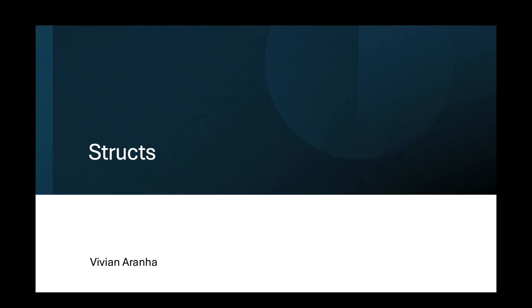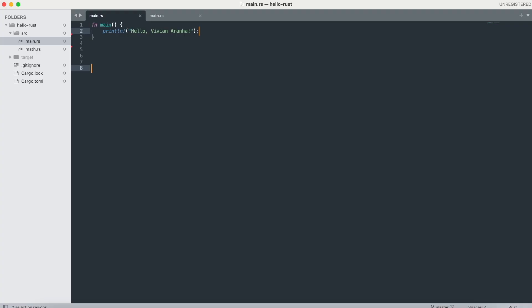Welcome back. In this section, we are going to look at structs. Structs in Rust are a way of grouping related data together into a meaningful package. They are similar to structs in other languages like C, but with more powerful features such as methods — which we'll cover too. Structs are used to create custom data types. Let's look at defining and instantiating structs.